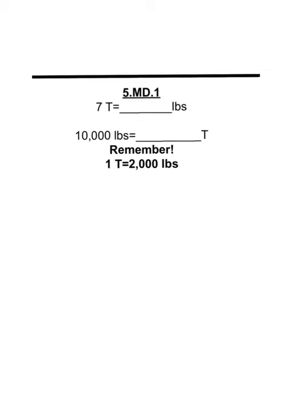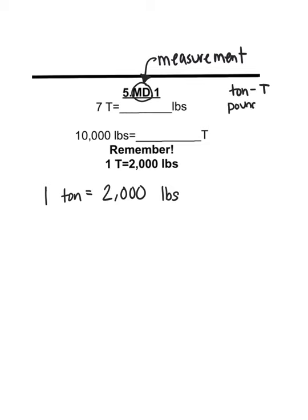Next we have a measurement problem. Whenever you see the standard with an MD in it, it stands for measurement. And this is important to note because it's a good idea for you to kind of think about what you know about a topic. You guys know a lot about measurement. This is asking us to think about tons. This T here stands for tons, and a ton is a very large unit of measurement. Think like elephants or dump trucks full of rocks. They want to know how many pounds is equivalent to seven tons.